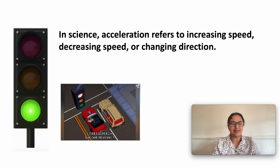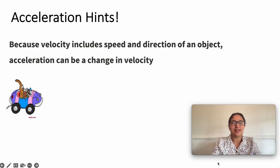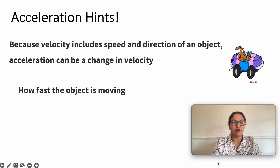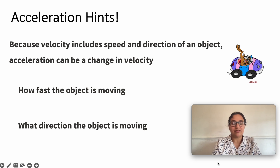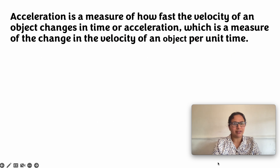In science or physics, acceleration refers to increasing speed, decreasing speed, or changing direction. When we studied about velocity, we already learned that velocity includes speed and direction — how fast the object is moving and what direction the object is moving. That means the change in velocity involves a change in speed, direction, or both.